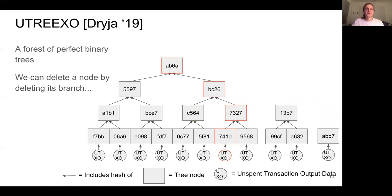Utreexo solved this problem by just keeping track of the roots of a collection of perfect binary Merkle trees. So here you can see there's a tree of size 8, a tree of size 2, and a tree of size 1.